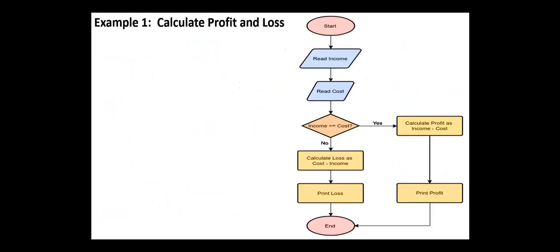We move to examples on flowcharts. To calculate profit and loss, we read the income and the cost. After that, we check if the income is greater than or equal to the cost; then we calculate the profit as income minus cost, and we print profit in this case. Otherwise, we calculate the loss as cost minus income and print the loss.